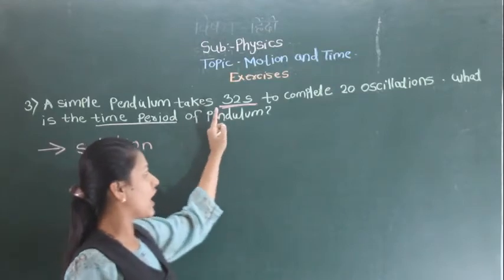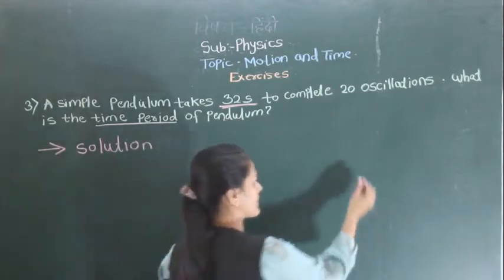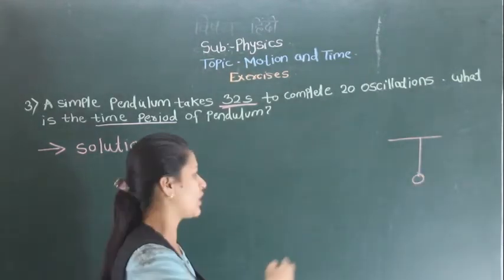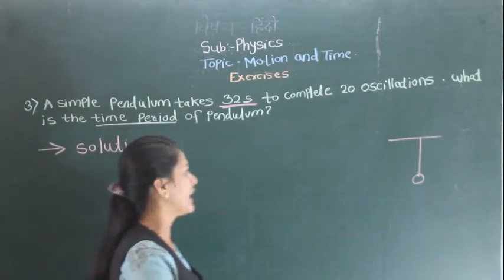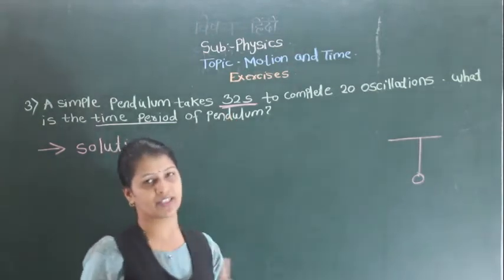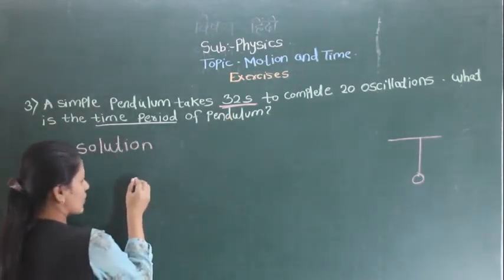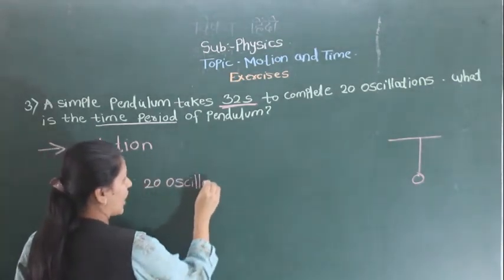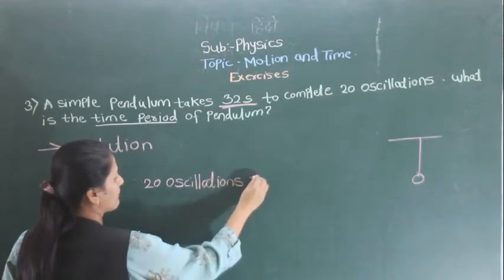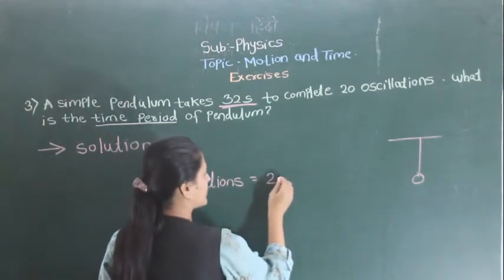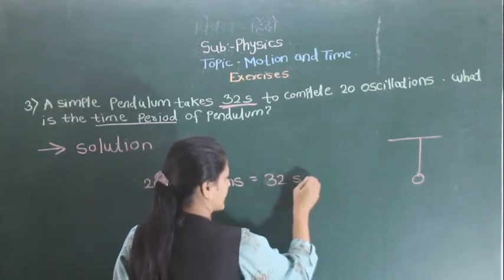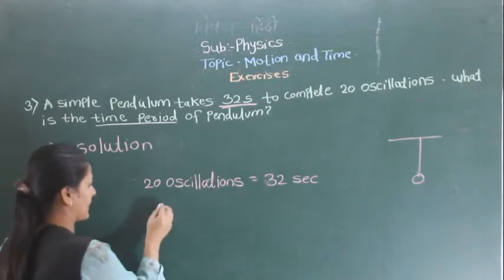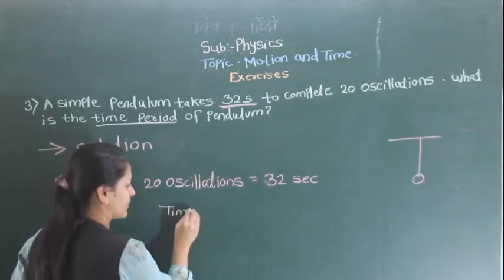First, for 20 oscillations, what is the time period? You see the simple pendulum — when it goes to and fro, it takes 32 seconds. So there are 20 oscillations. How much time is taken to complete? 32 seconds. And what have we been asked? We have to find the time period.